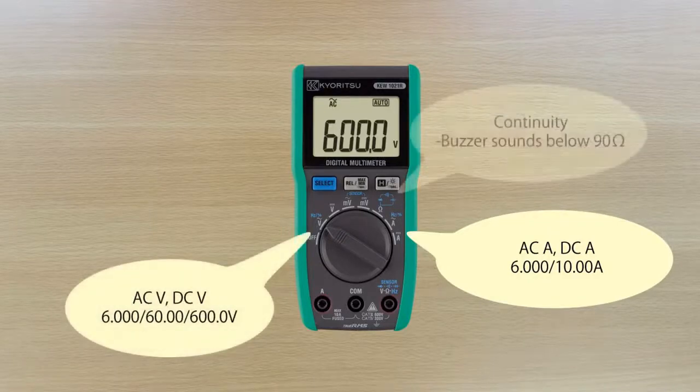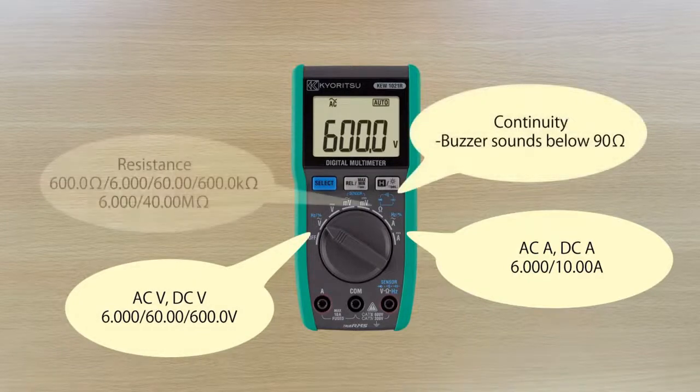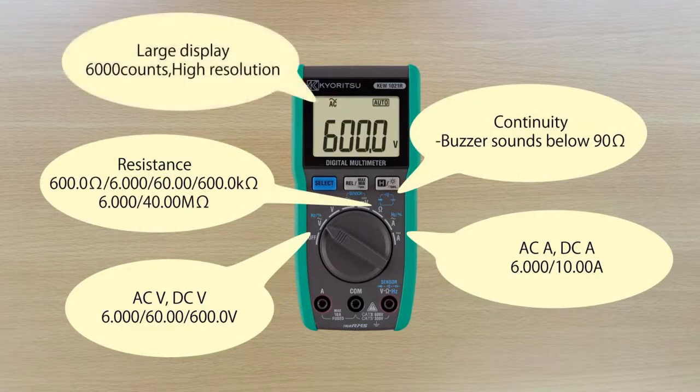Additionally, it measures continuity, capacitance, frequency, resistance, duty cycle, and diode test. The 1021R is a high resolution, 6000 counts multimeter featuring an extra large backlit display.